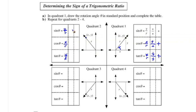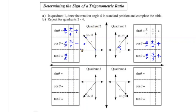In quadrant two, the sine of theta is y over r. The y value is positive here, and r is positive, so sine is positive in quadrant two. For cosine, x over r — the x is negative going in that direction from the origin — over a positive radius, so cosine is negative in quadrant two.